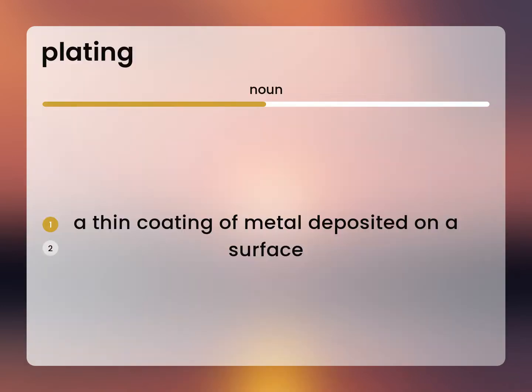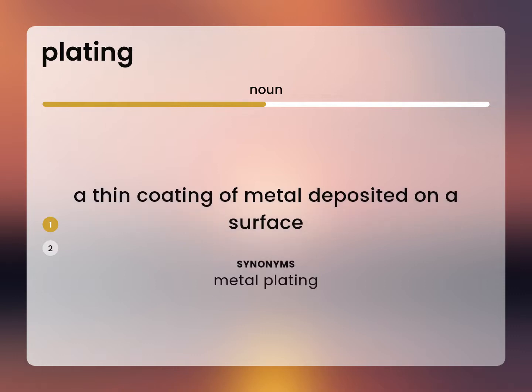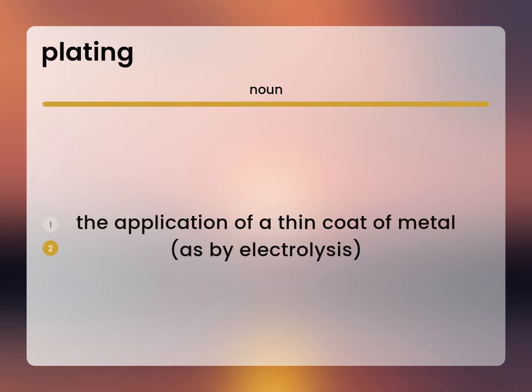Metal plating. A thin coating of metal deposited on a surface. The application of a thin coat of metal, as by electrolysis.